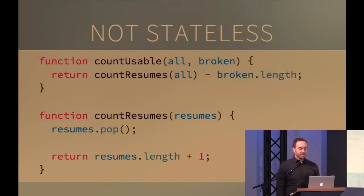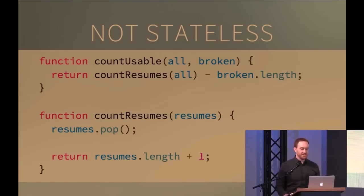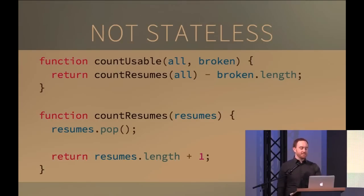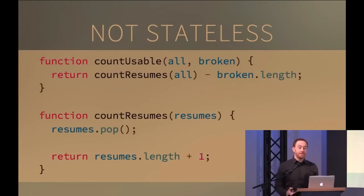What about this: `countResumes` calls `resumes.pop()` — it mutates the input array — and then returns `resumes.length + 1` to cover it up. State has snuck back in, but this is more pernicious because our test won't fail unless we specifically pass an empty array. With an empty array, it tries to pop nothing, then returns length plus one — wrong. But in all other cases it passes. Hopefully we had a test covering this edge case.